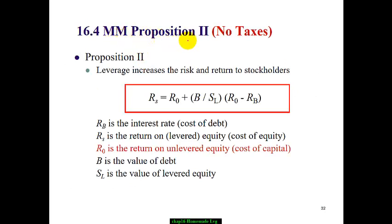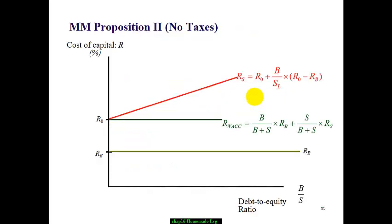MM Proposition 2 answers the question: what is the effect of leverage on cost of equity? We use R_S to refer to the return on equity or cost of equity, R_B for the cost of debt or interest rate, and R_0 for the return under an unlevered capital structure. When the company starts with all equity and has no debt, the cost of equity or cost of capital is defined as R_0. S_L is the value of levered equity. MM Proposition 2 states that cost of equity depends on the unlevered cost of equity plus the leverage — the debt-to-equity ratio — times the difference between R_0 and the cost of debt.